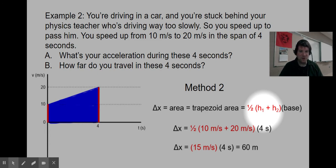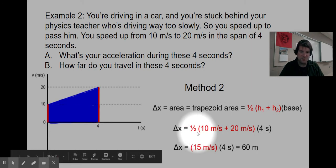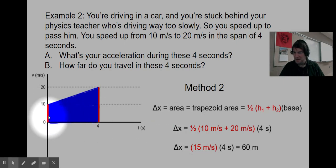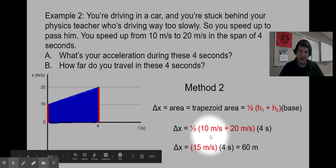We multiply the average of the two unequal heights times the base. Taking that average of the two unequal heights: one height is 10 meters per second, the other height is 20 meters per second. Half of 10 plus 20 is 15 meters per second.